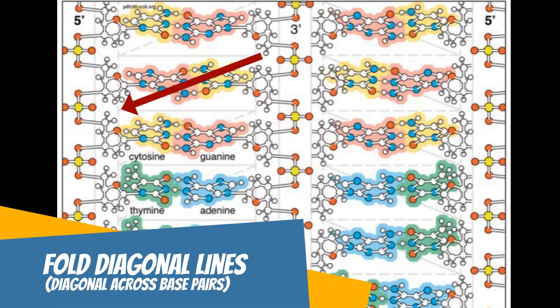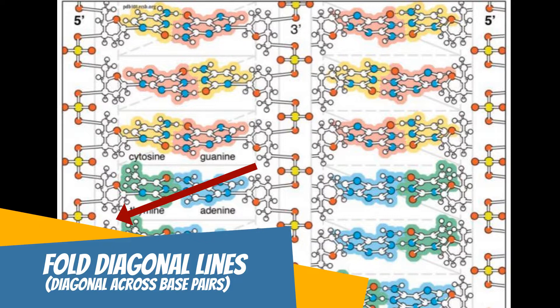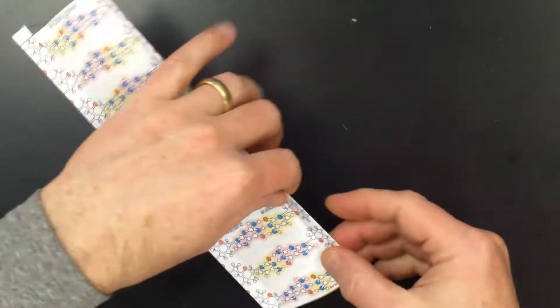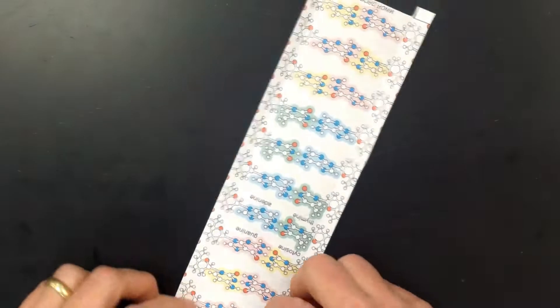Now you want to repeat this process for all the diagonal folds. Again, making sure to have solid lines on the outside edge of folds and the dotted lines hidden on the inside edge of the fold.